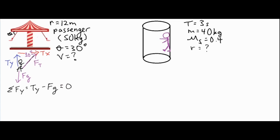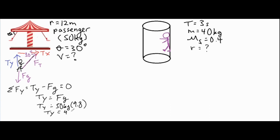Looking at the vertical forces, we only have Ty and Fg. The sum of forces in the y direction is Ty minus Fg, and that equals zero because there's no vertical acceleration. So Ty equals Fg. Since force of gravity is mass times 9.8, and the mass is 50 kilograms, that gives us Ty = 50 × 9.8 = 490 newtons.